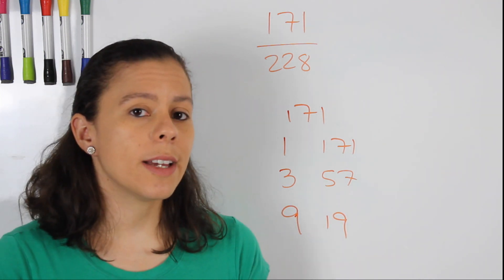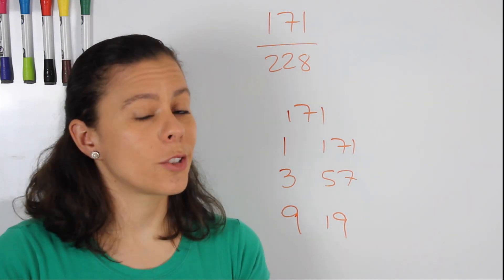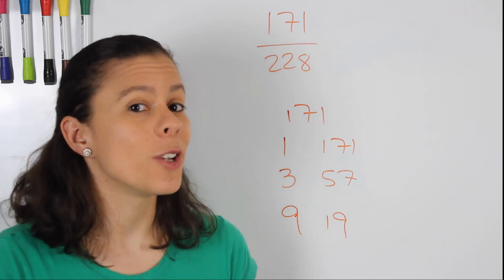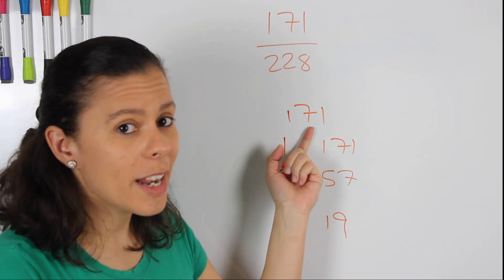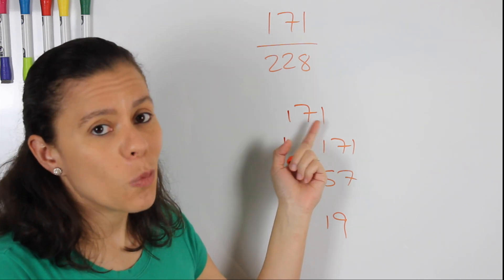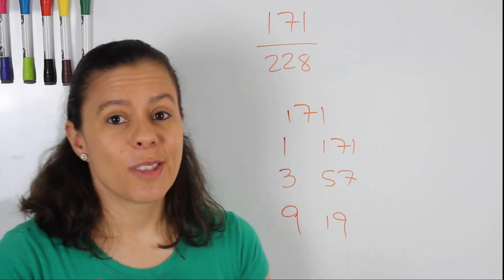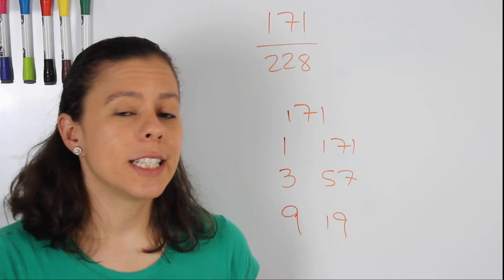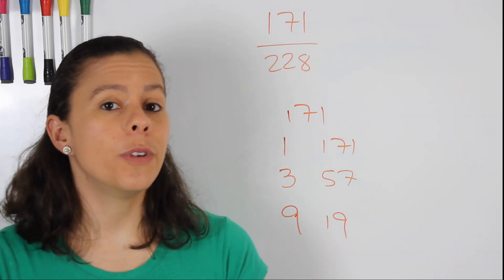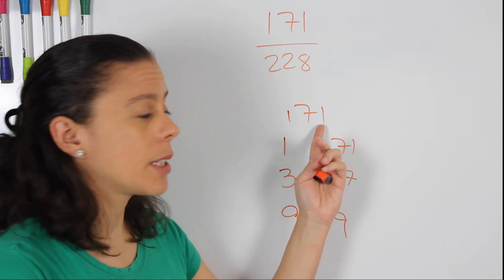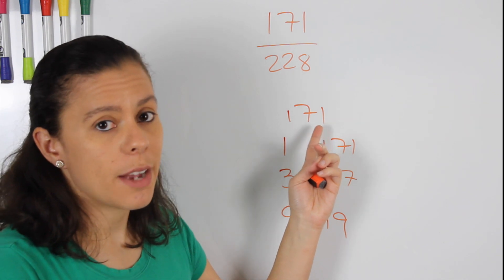Then we go to 11. And if you saw my other video on tricks with the table of 11, you will see that this is not a multiple of 11 because 1 plus 1 is not 7. Then we go to 13. We see that 13 is also not a factor. We go to 15, cannot be a factor because this does not end in 5 or 0.